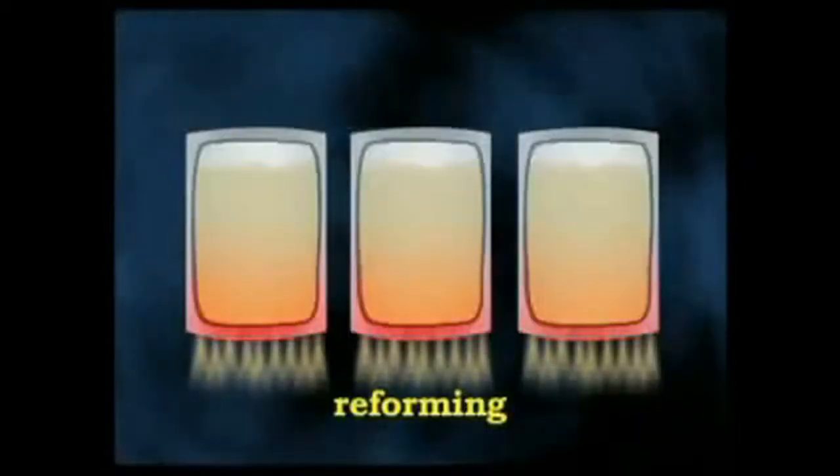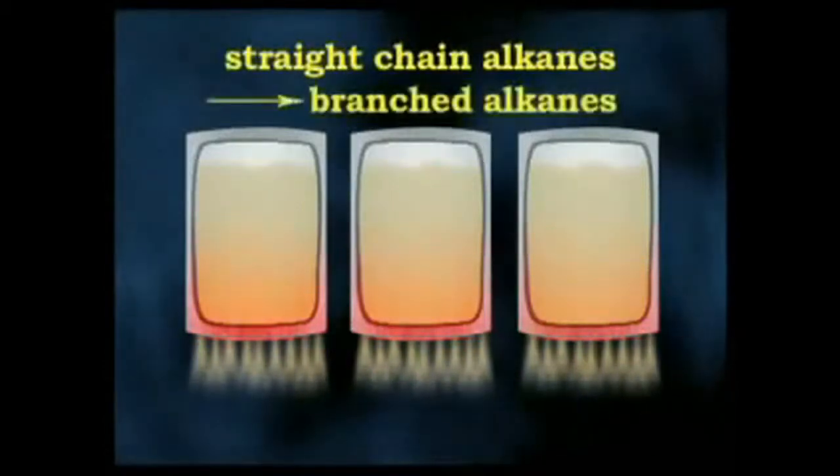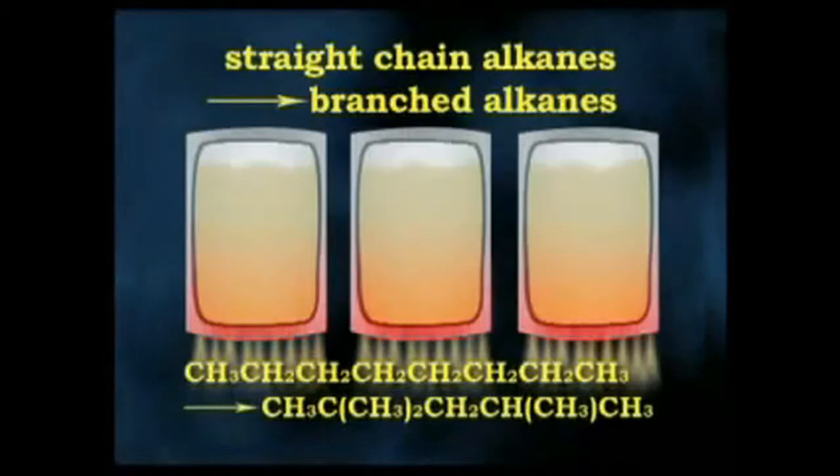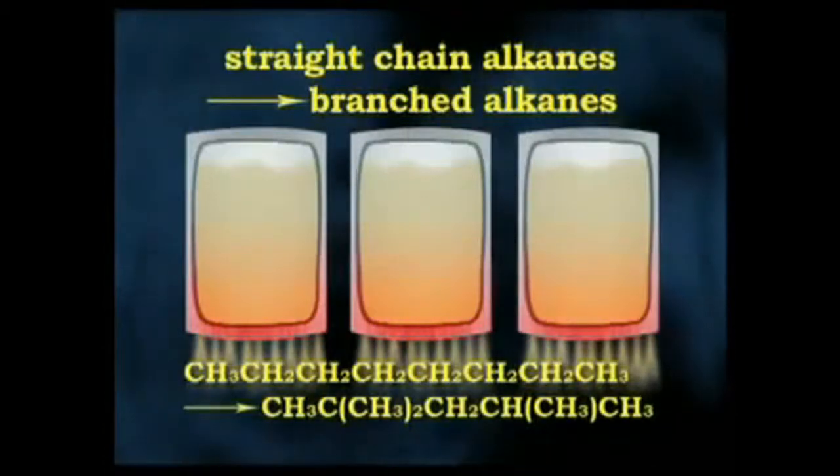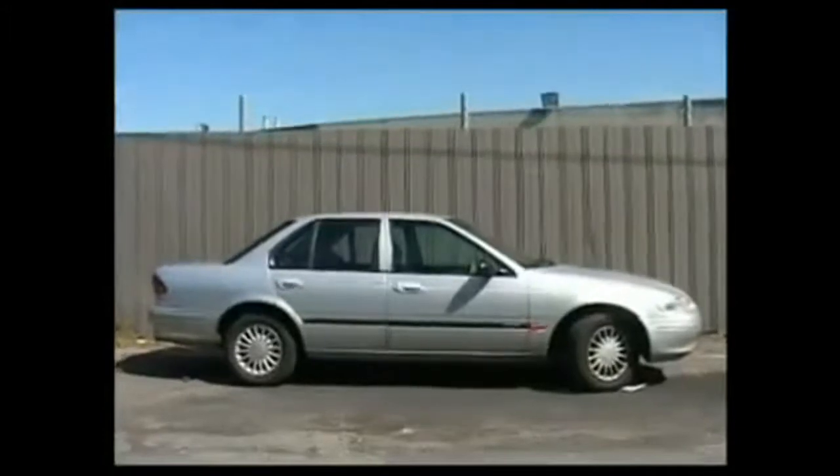Reforming involves the breaking of straight chain alkanes into branched alkanes. The branched chain alkanes in the 6 to 10 carbon atom range are preferred as car fuel.